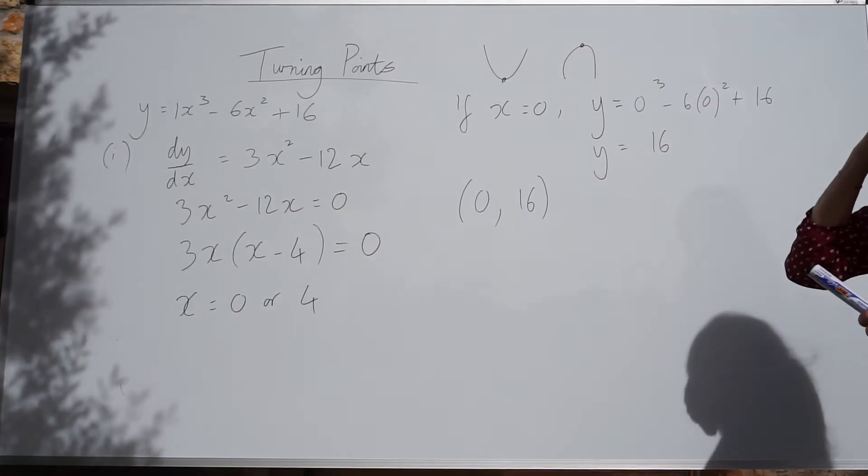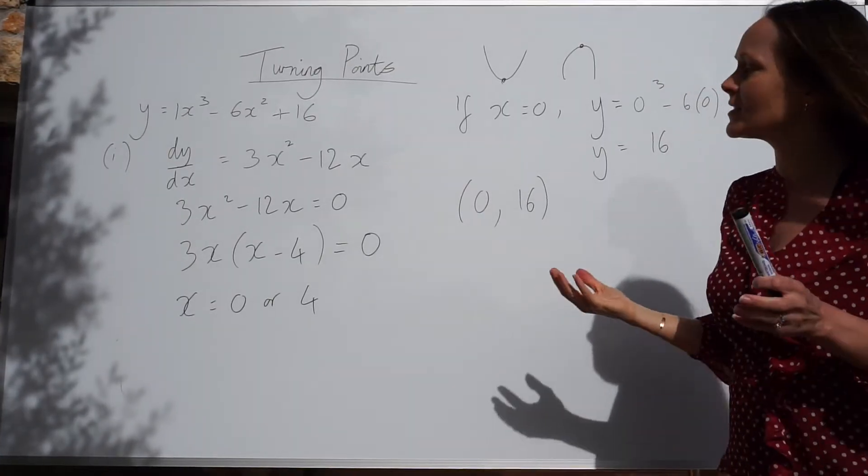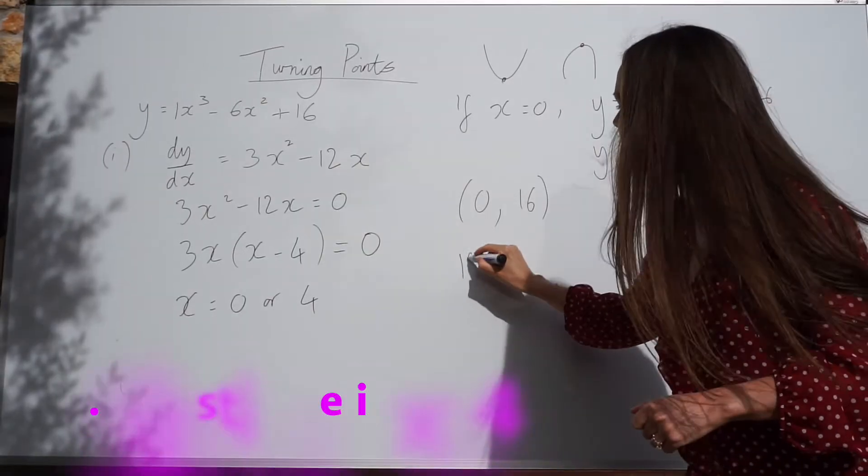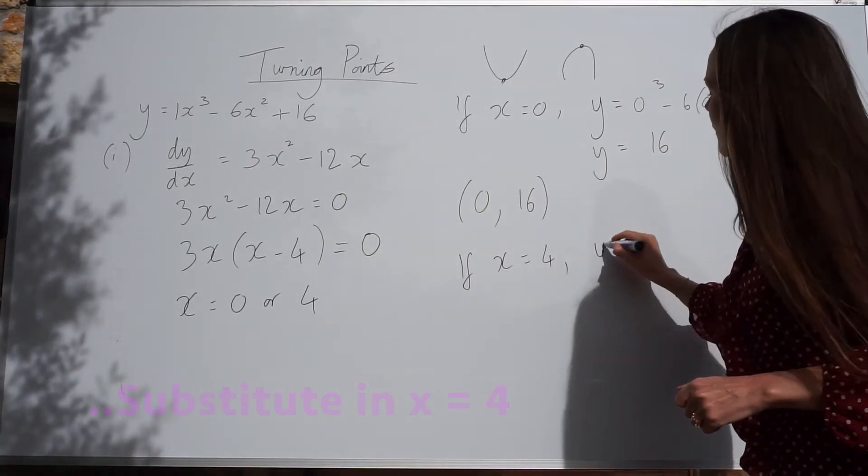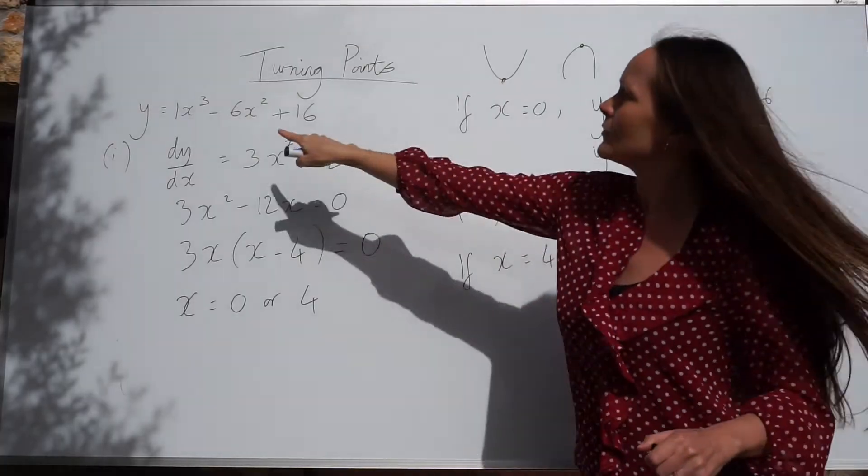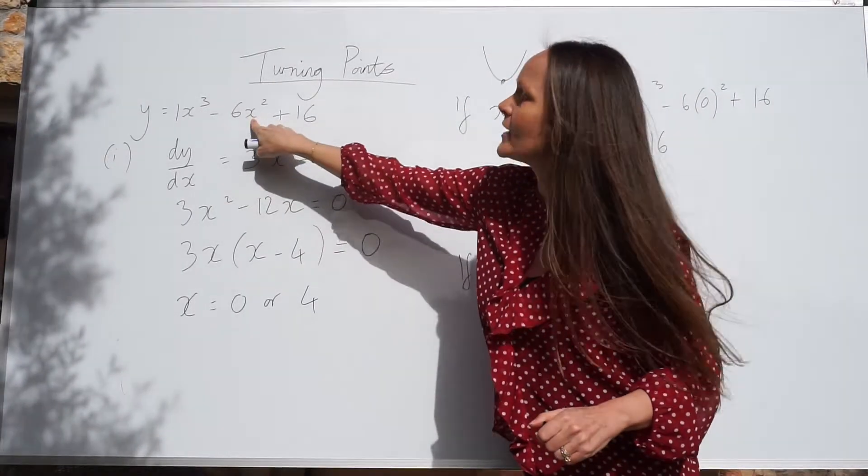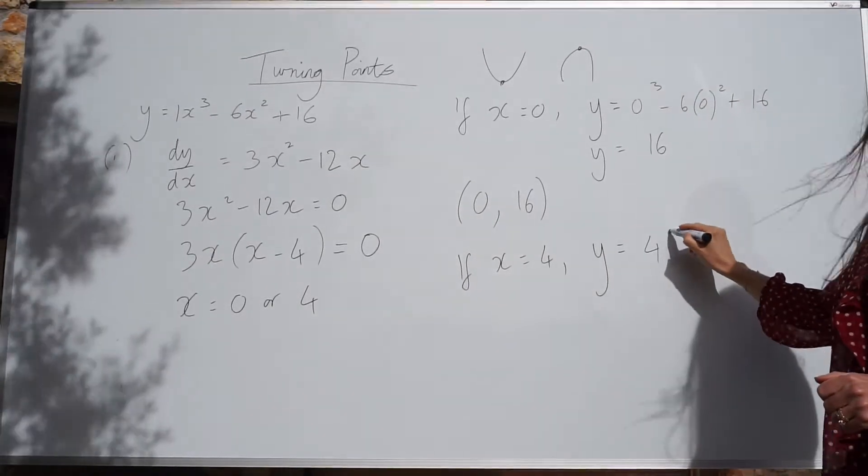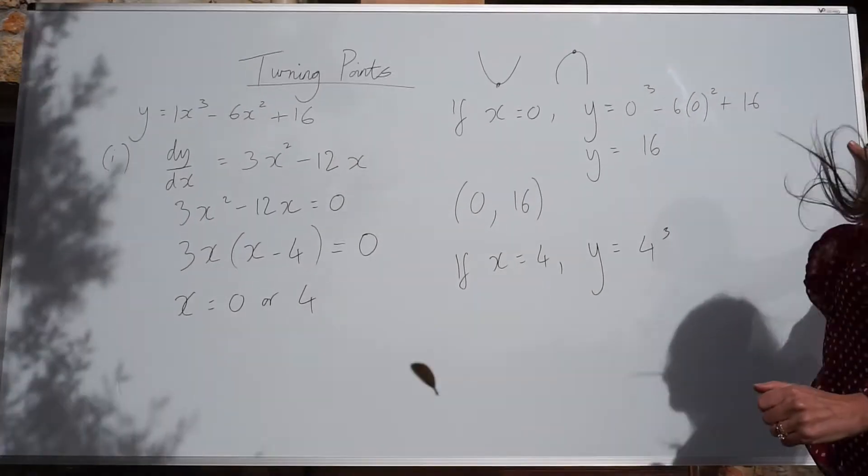For the other one, we're just going to do exactly the same thing. We're going to substitute in our second value of x, 4. So if x is equal to 4, y is equal to... Remember, we're substituting 4 into here. Here. So we've got 4 cubed. Gosh, it is a bit windy, isn't it?